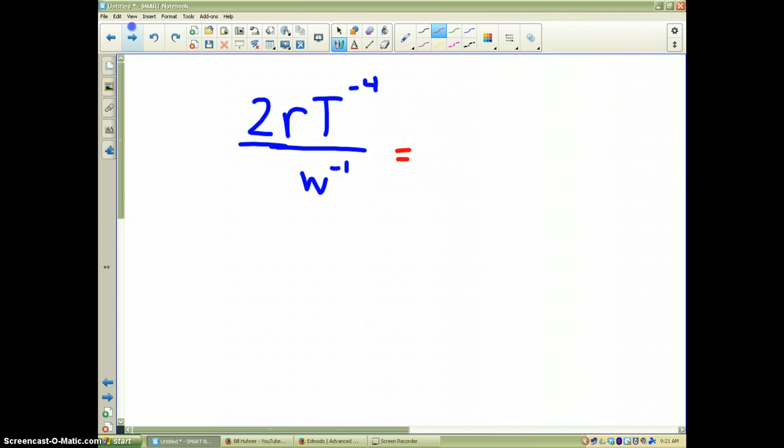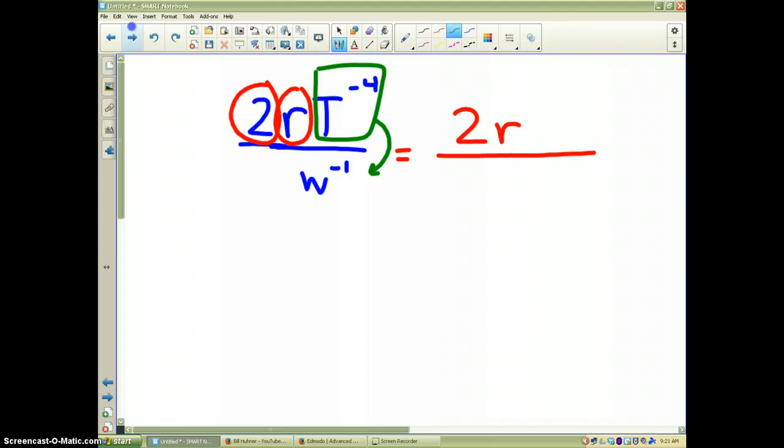All right, if you did this problem correctly, you're going to notice the 2 and the r both have positive powers. The 2 is to the first power. The r is to the first power. So, they stay where they're at. I am going to take the t to the negative 4 power and move it to the denominator to make it positive. And, I'm going to take w to the negative 1 and move it to the numerator to make the negative 1 power positive. And, of course, we never write 1s.